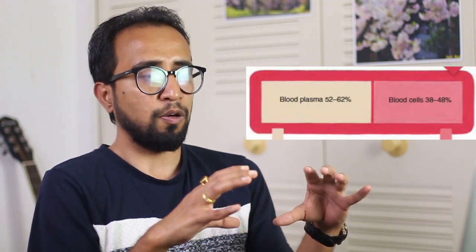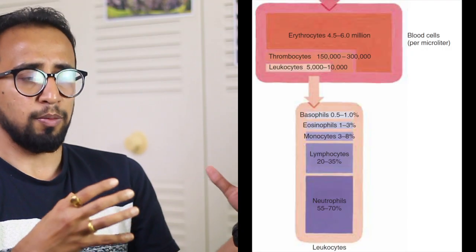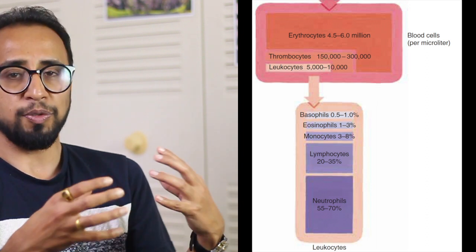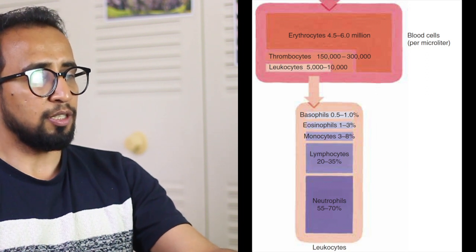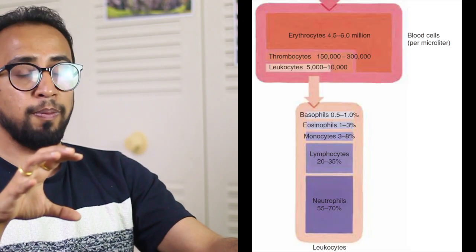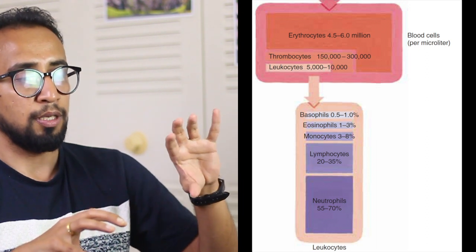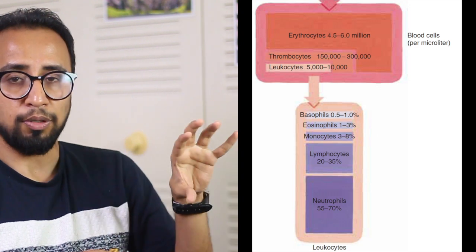To recapitulate blood cell composition: blood consists of blood plasma — about 52 to 62% — and blood cells — about 40 to 50%. Blood cells include erythrocytes (red blood cells), thrombocytes (platelets), and leukocytes (white blood cells) such as basophils, eosinophils, monocytes, lymphocytes, and neutrophils. Lymphocytes make up about 20 to 35% of white blood cells and are derived from lymphoid progenitor cells, while other white blood cells such as basophils, eosinophils, and neutrophils are derived from myeloid progenitor cells.